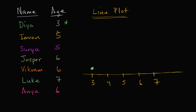Now I have Imran, age five. So that's someone right over here who would be age five. This dot represents Imran, who's age five. Then you have Surya, who's also age five — so we have a second person at the party who is age five. Under age five, we now have two people: this is Imran and this is Surya.